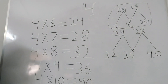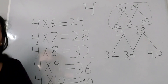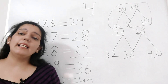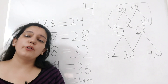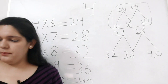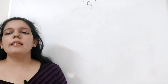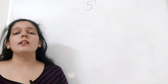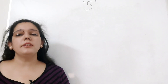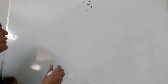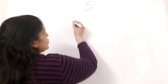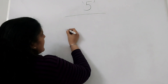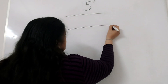So here we have our 4 times table ready. Next we will move on to the 5 times table. We will now see what's the trick to learn the 5 times table. For that we will first draw 2 rows with 5 columns each.